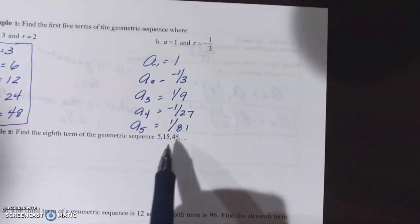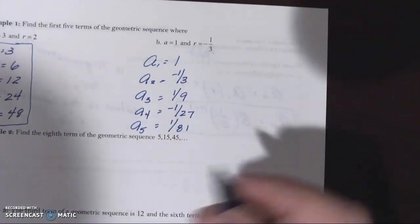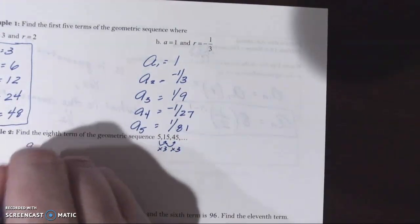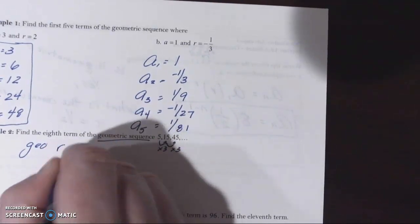Example two. Find the eighth term of the geometric sequence, 5, 15, 45. Is it geometric? Is it arithmetic? Is it neither? Well, I multiply by three. I multiply by three. This is geometric.